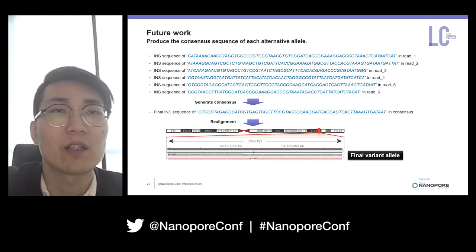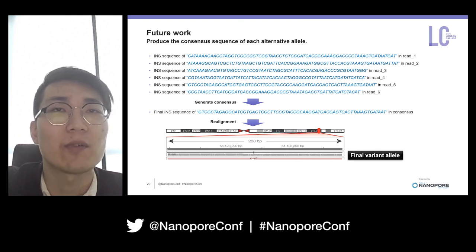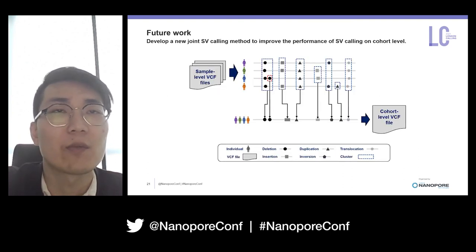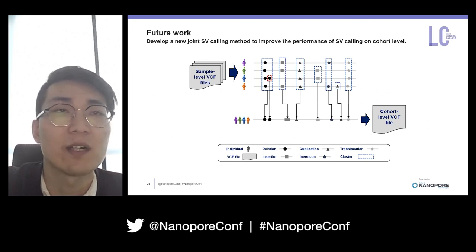In terms of future work, I currently have two things to do to further improve long-read structural variation calling. The first is to produce the consensus sequence of each alternative allele. The consensus sequence will effectively repair errors produced in sequencing and alignments and reproduce the actual DNA fragments. Realigning the consensus sequence will further promote the accuracy of breakpoint and size. Another future work is developing a new joint structural variation calling method, applying divide-and-conquer strategies and specific clustering approaches for cohorts to improve performance at the cohort level.